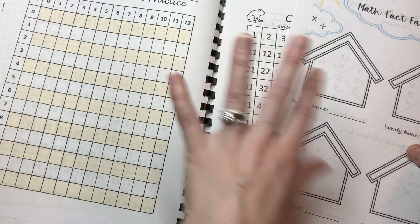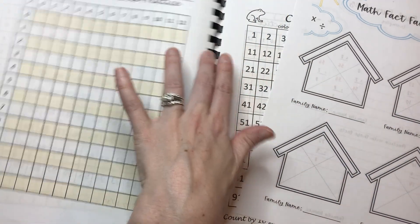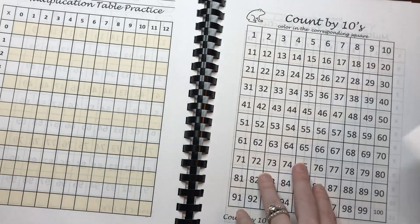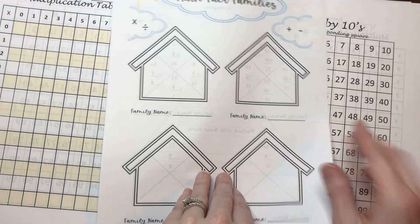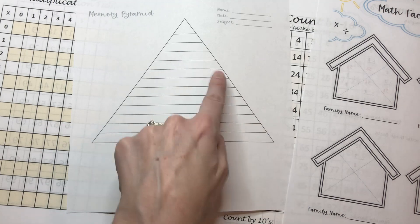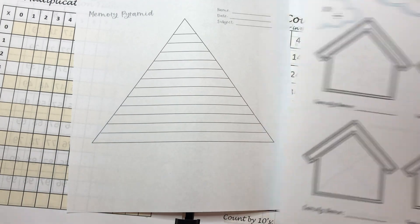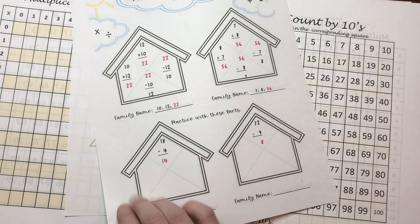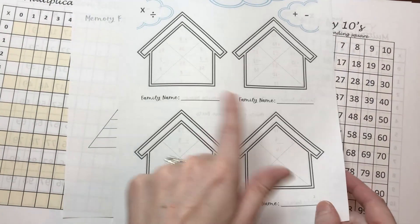I also have these sheets. This comes, what I'm showing you now is actually a bundle, the division and the multiplication. It comes with a memory pyramid for practicing their skip counting to memorize those and math fact families. You can see how they are when they filled out but they could work on if they are missing a certain fact.